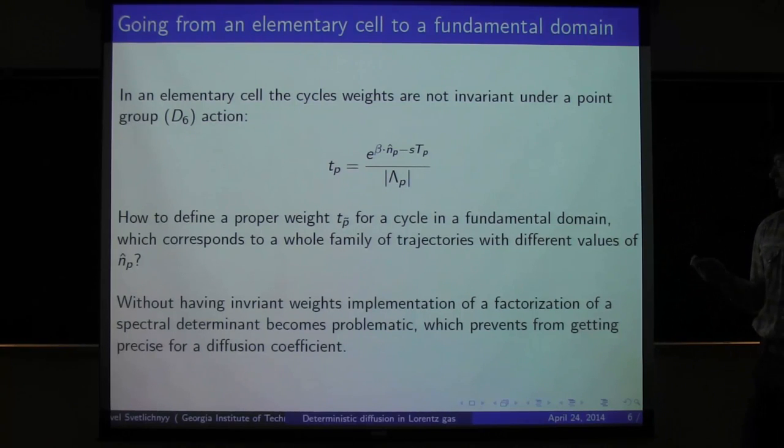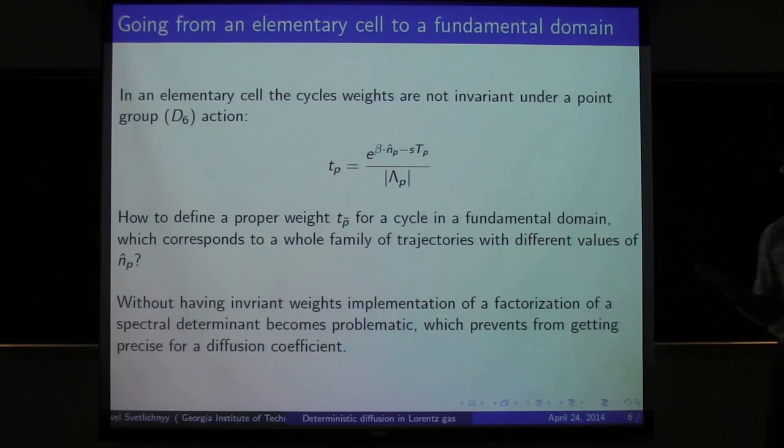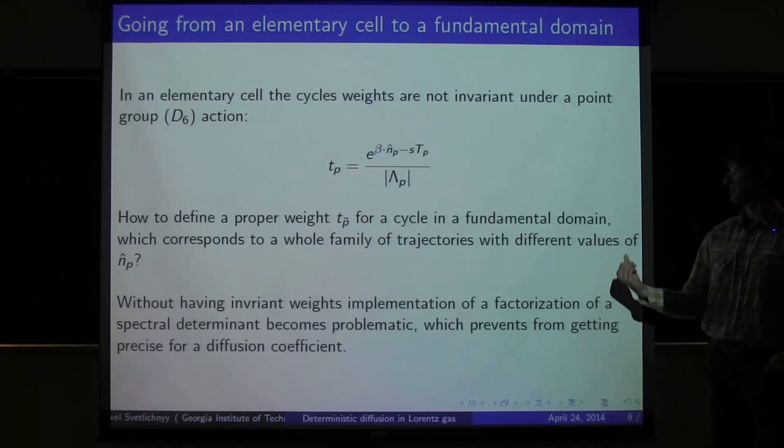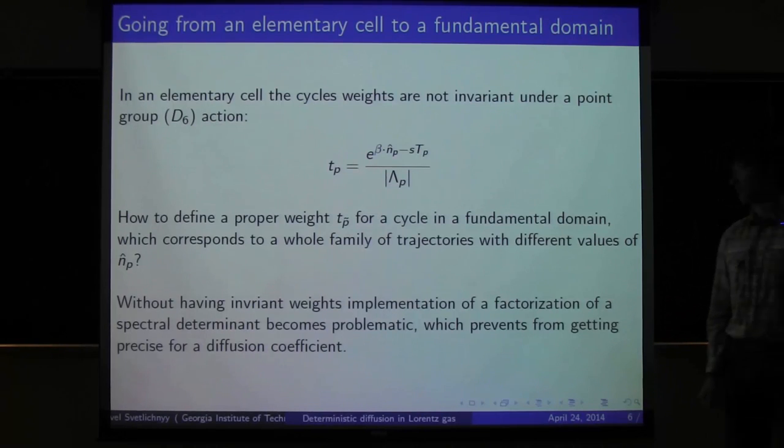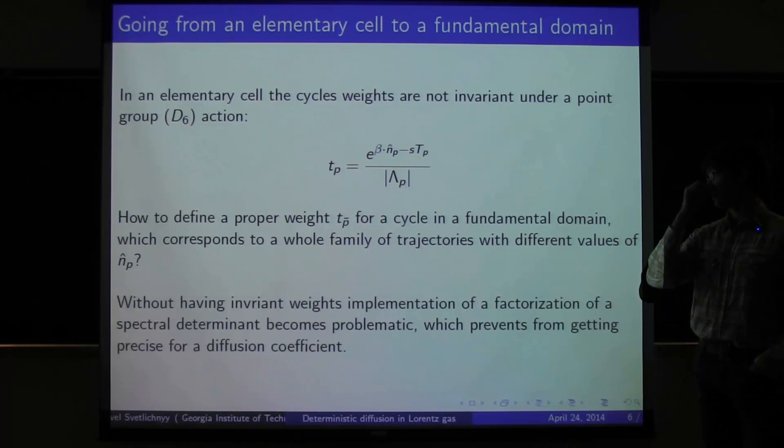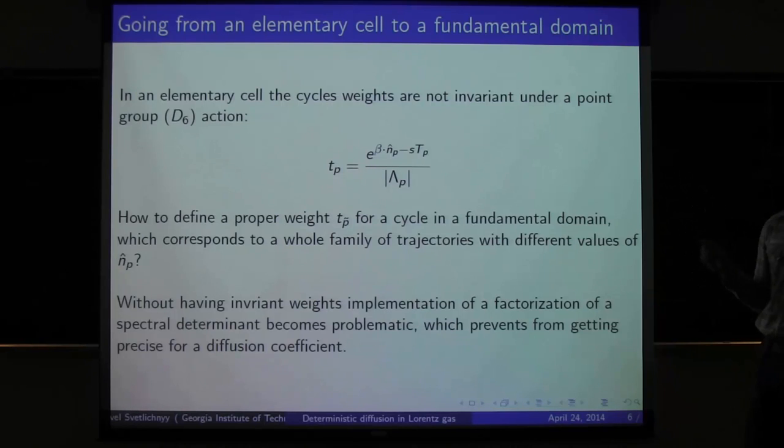Each kind of cycle can be reproduced by rotating it or flipping it. For an elementary cell, there are many copies of practically the same cycle, just with different values of this translational vector.